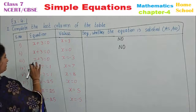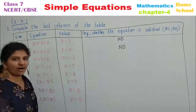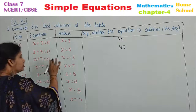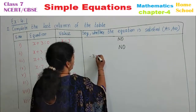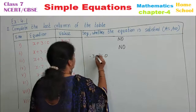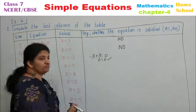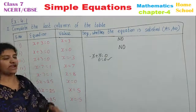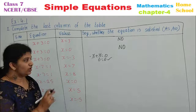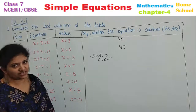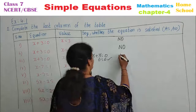The third one: x plus 3 equals 0, with x equal to minus 3. Substitute: minus 3 plus 3 equals 0. Minus 3 and plus 3 cancel, giving 0 equals 0. Yes — x equals minus 3 satisfies this equation. Both expressions are equal.